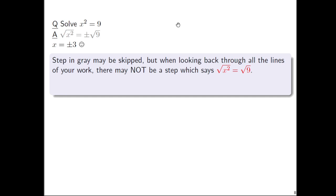However, when looking back through all the lines of your work, there may not be a step that says √x² = √9. That would be missing a plus or minus sign. To comment on this again, the very first step in which you square root both sides must have a ± sign.